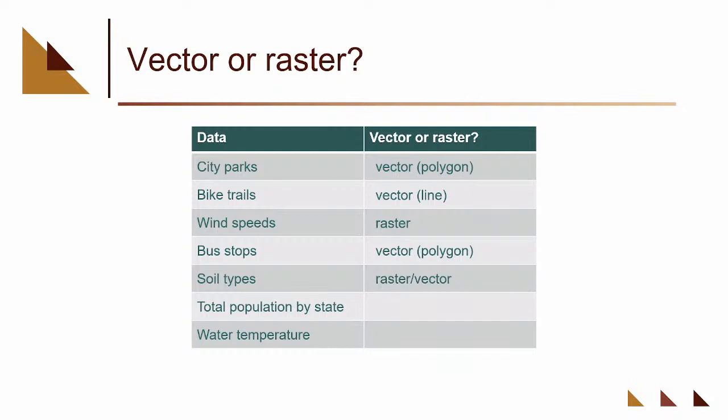Soil types could go either way — raster or vector. A lot of times soils are generated out of other raster data sets and imagery could be part of it. Population by state: state boundaries are very discrete, so I would make that a vector polygon data set.